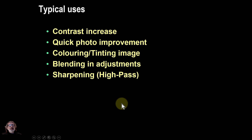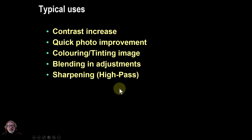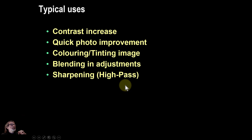Typical uses include increasing contrast for a quick improvement — we'll see that in the subsequent video — as well as tinting, blending, and adjustments, which are used a great deal. You can also use it for things like sharpening. That's a summary of the overlay blend mode, and we'll see more in the subsequent videos. Thank you very much for watching.